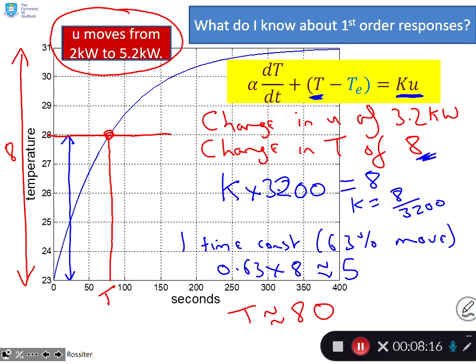So on this slide, we've worked out K - 8 over 3200 - and we've worked out T, and those are the two unknown parameters in our model.